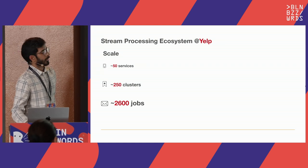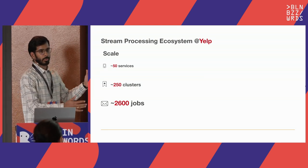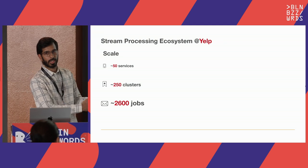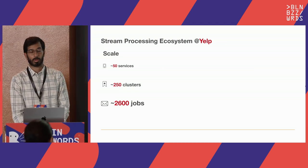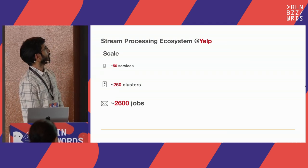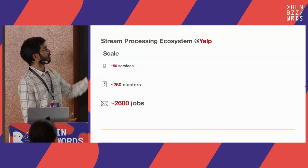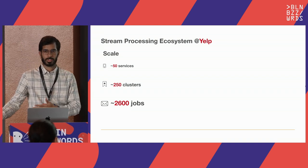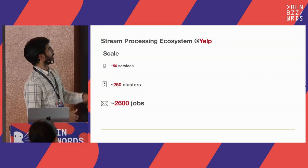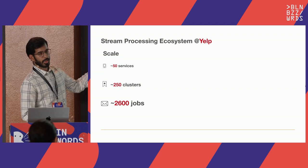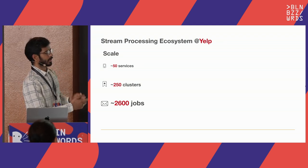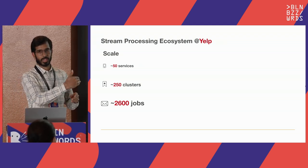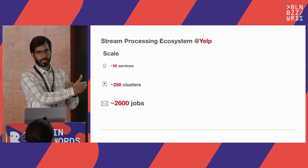At scale, we manage 50 different Flink services running on our platform across 250 clusters — the difference is because one service might have different instances running. On those clusters, we have roughly 2,600 jobs, including all source and sync connector jobs.